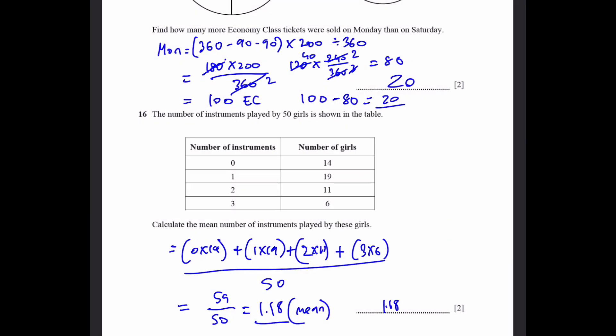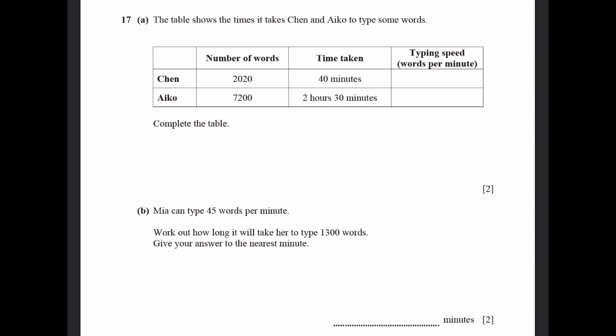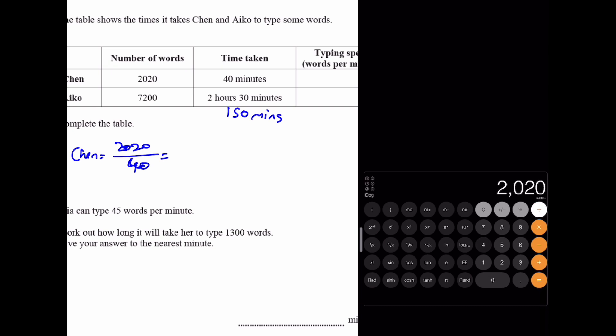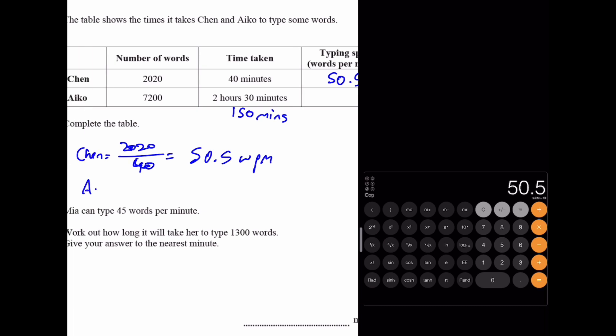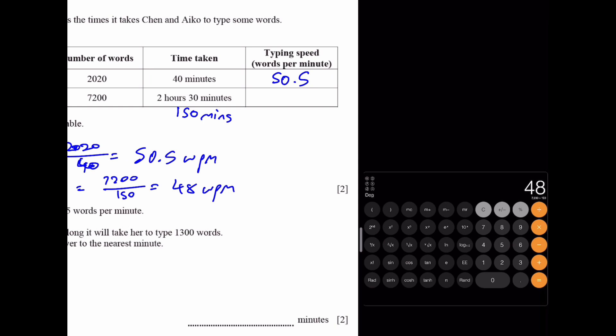Question 17a. The table shows the times it takes Chen and Echo to type some words. Chen can type 2,020 words in 40 minutes, and Echo can type 7,200 words in 2 hours 30 minutes. Complete the table. 2 hours 30 minutes equals 150 minutes. Typing speed will be for Chen, 2,020 by 40. We get 50.5 words per minute. For Echo, it'll be 7,200 by 150. We get 48 words per minute.